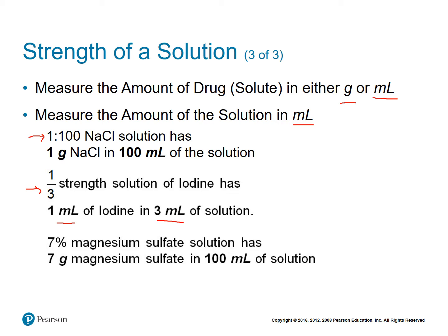You know it's going to be 100 milliliters for the first and last examples. For the first one, 100 was explicitly stated — one gram for every 100 milliliters. On the last example, seven grams in 100 milliliters — we know it's 100 milliliters because percent means out of 100. That's how we know it's 100 milliliters of solution.